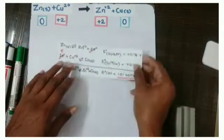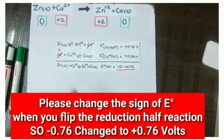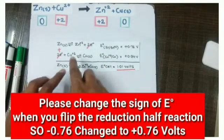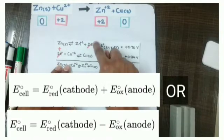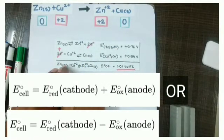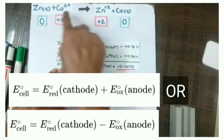Now let's sum up the overall reaction. Adding them, these 2 electrons and 2 electrons get cancelled, and this reaction gets converted into the above reaction.